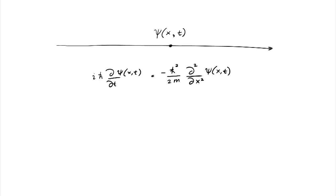From the general form of Schrödinger's equation, the right-hand side must be the Hamiltonian — the observable that corresponds to energy. So this is minus ħ² over 2m times d²/dx². It's a bit puzzling, but we'll try to make sense of this as we go along.